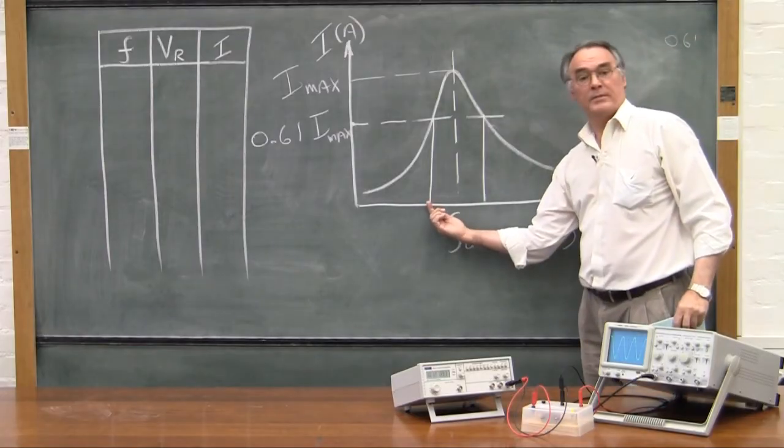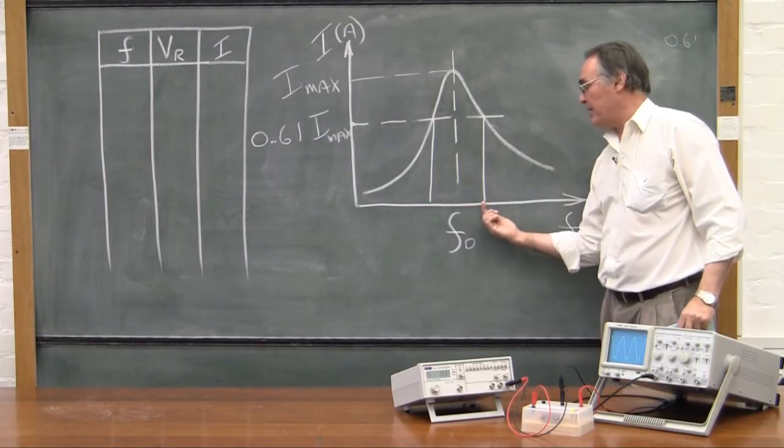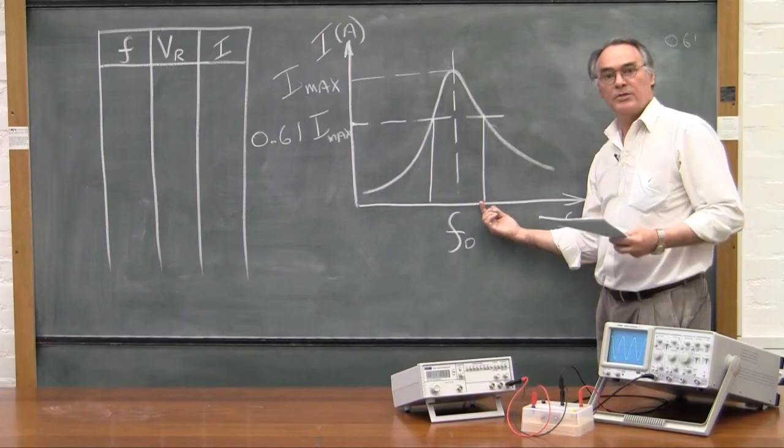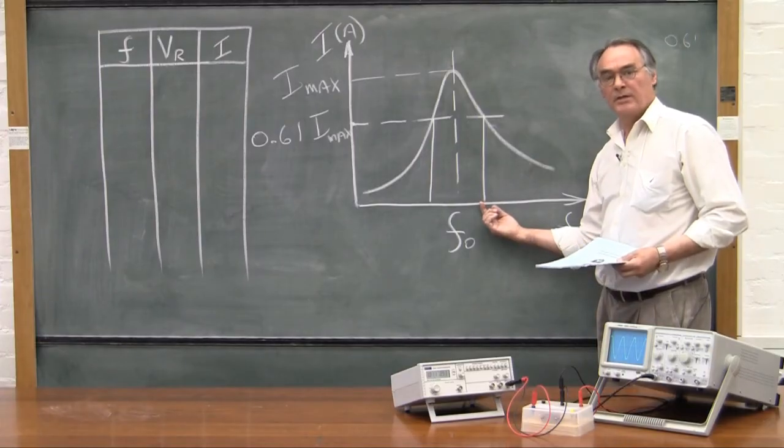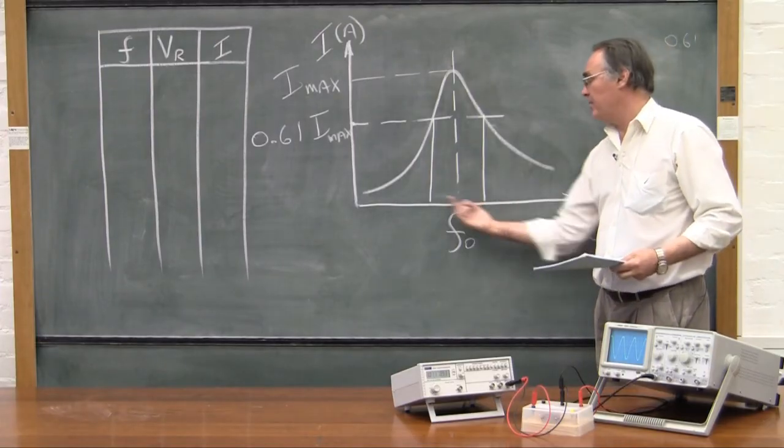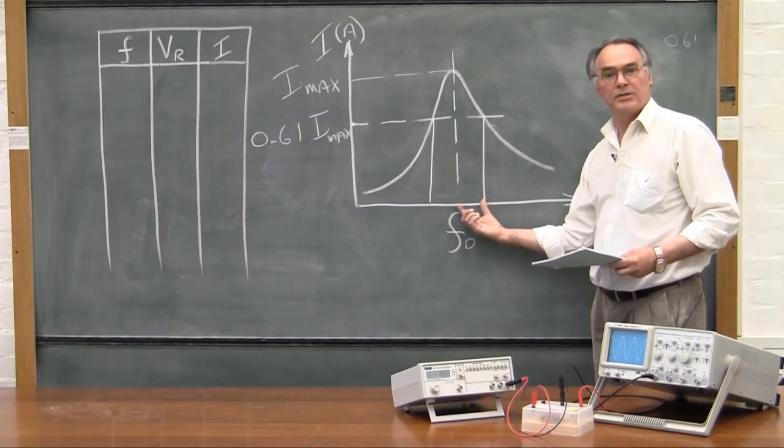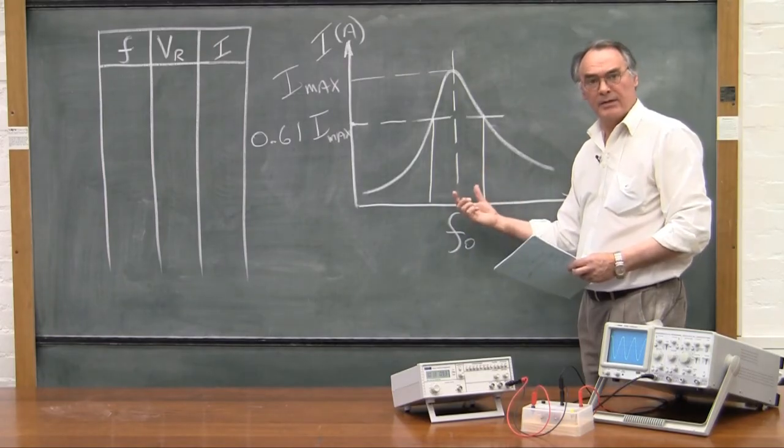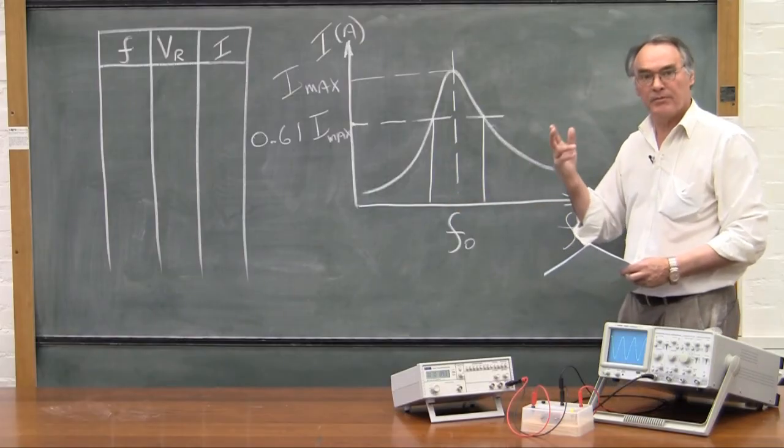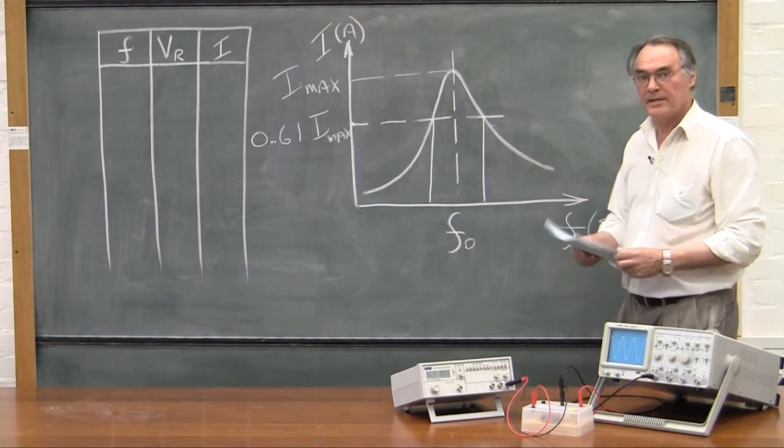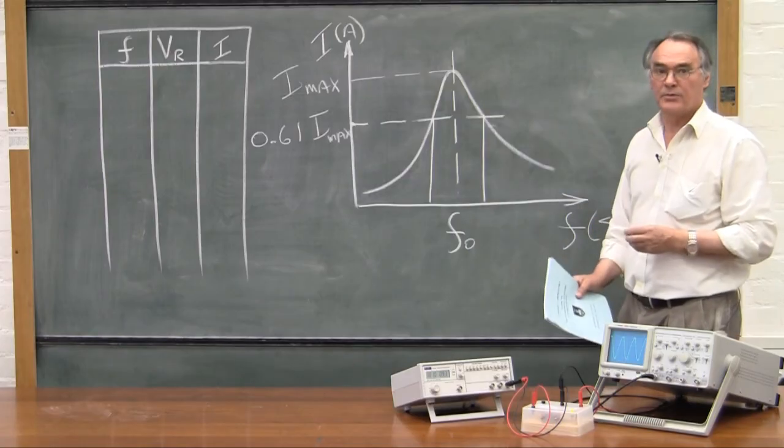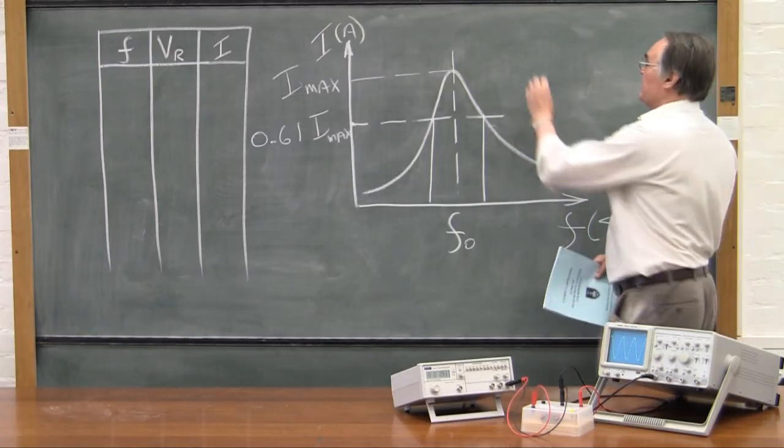This interval from some frequency here to some other frequency there is two standard deviations. Obviously to find one standard deviation you divide that by two, you'd have one standard deviation and then you'd use that number to get the standard deviation of the mean. And it's the standard deviation of the mean that you're going to quote as a result of this measurement.